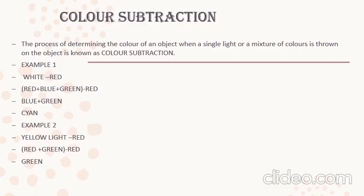The next topic is color subtraction. Now I am going to deal with the first example — white minus red. Your white light consists of all seven colors. If I include just red, blue, and green, and this is minus red, what will happen? Red and red will get cancelled off. Blue and green are only present in that particular light. What color will you get? You will get a color called cyan.